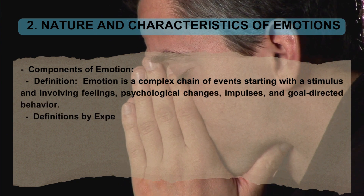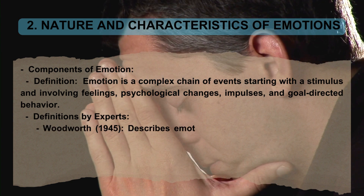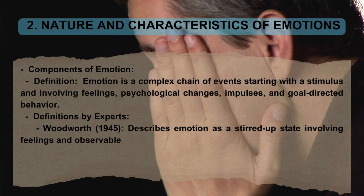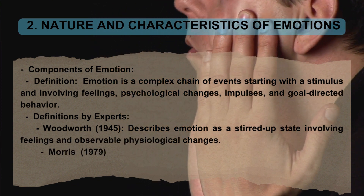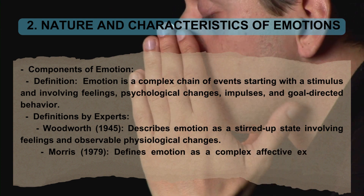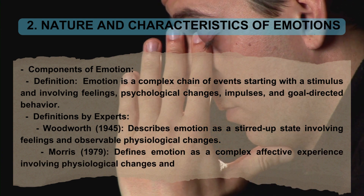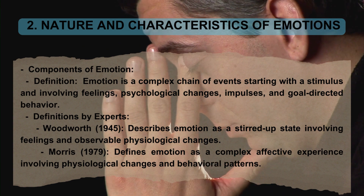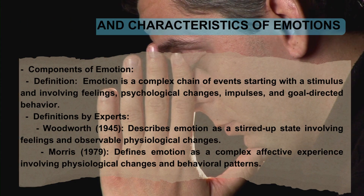Definitions by experts: Woodworth (1945) describes emotion as a stirred-up state involving feelings and observable physiological changes. Morris (1979) defines emotion as a complex affective experience involving physiological changes and behavioral patterns.